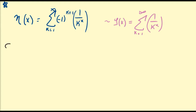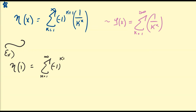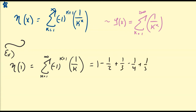We're going to begin by evaluating the Dirichlet eta function at a value you already know. For example, let's consider the value of eta at 1. This is equivalent to writing the sum from k equals 1 to infinity of negative 1 to the k plus 1 divided by k to the 1 — the alternating harmonic series. This is 1 minus 1/2 plus 1/3 minus 1/4 plus 1/5 minus and so on, which equals the natural log of 2.